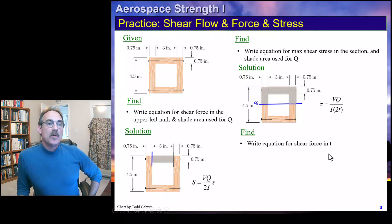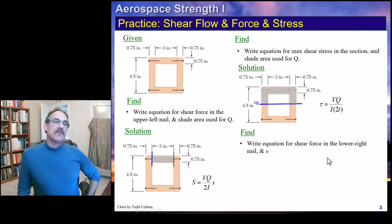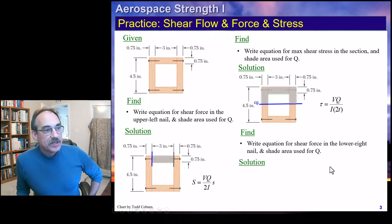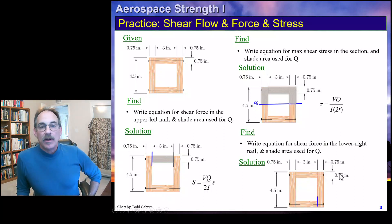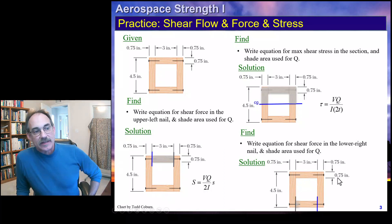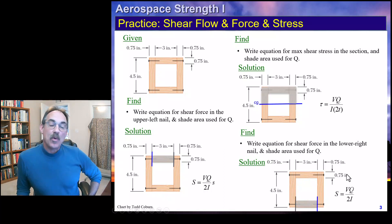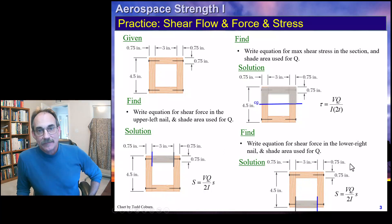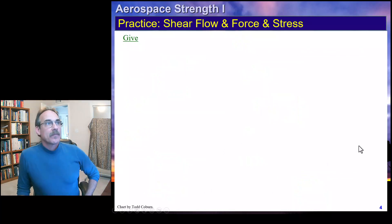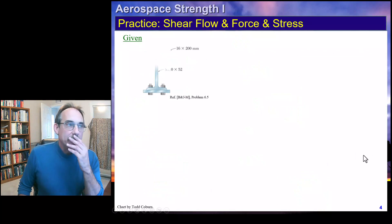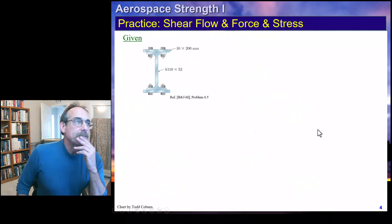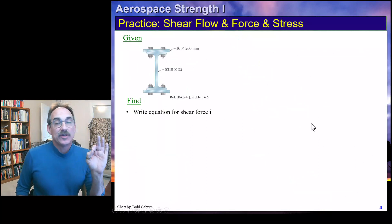For the shear force in the lower right nails, we do it the same way as the upper nail — separating off that piece. Since the section is symmetric, this gives us the exact same equation and magnitude.